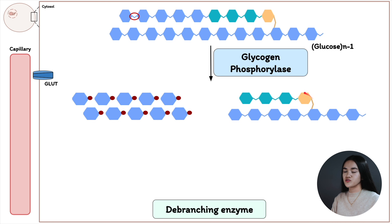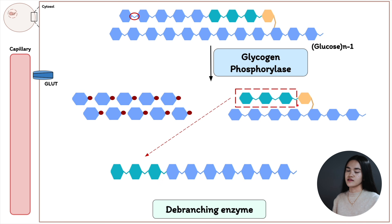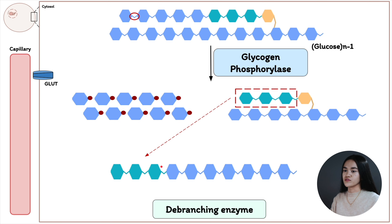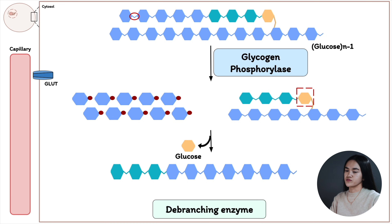The debranching enzyme grabs the three glucose units at the branch and transfers them to the main linear chain — this is called the transferase activity of the debranching enzyme. It reattaches those three glucose residues at a non-reducing end via an alpha 1-4 linkage. We are then left with one single glucose unit remaining at the former branch point.